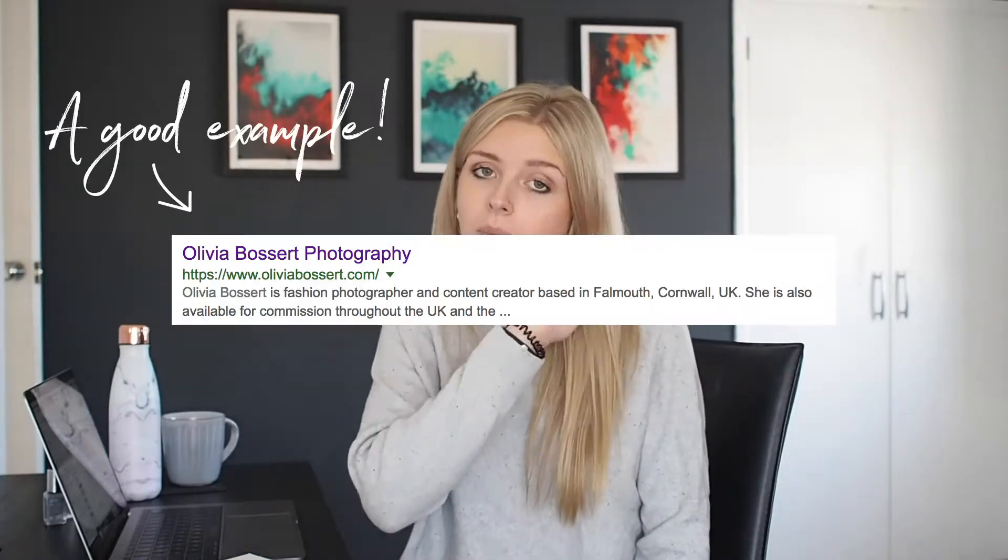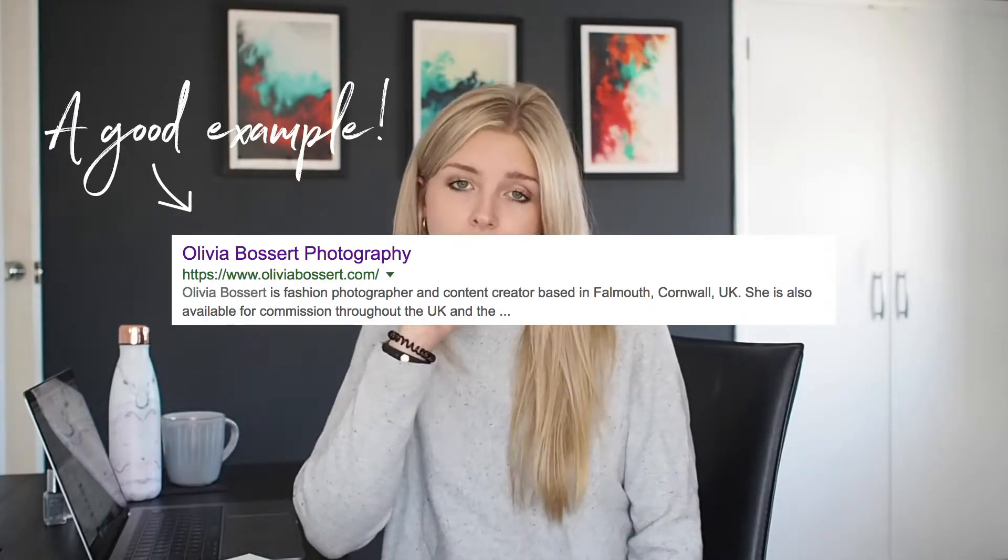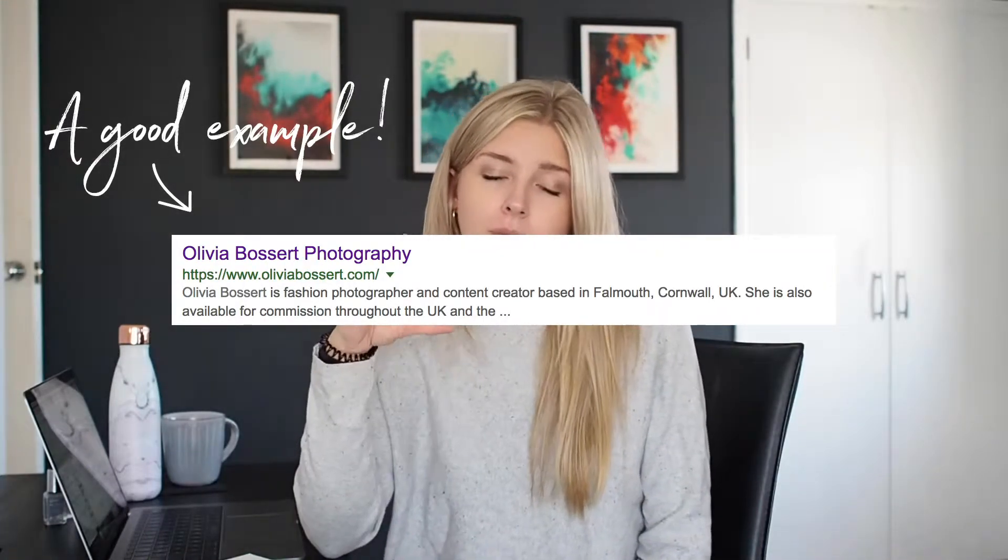The next step, once you know what keywords and phrases you want to be found for, is to create your search engine description. Your search engine description is basically the little phrase that comes up when you type in your website or when you come up in the rankings in Google, and this can be anywhere from 50 to 300 characters long.